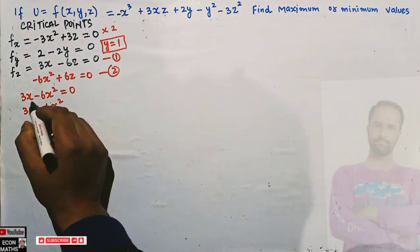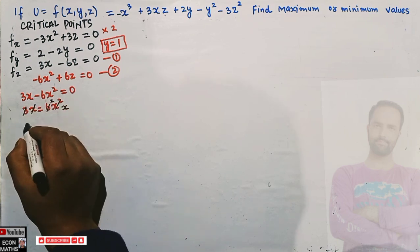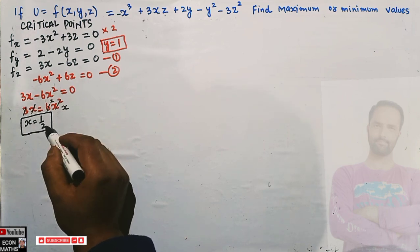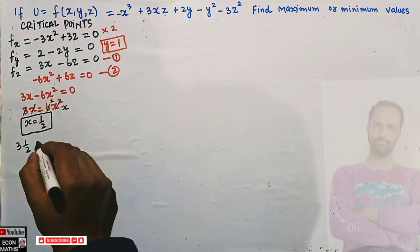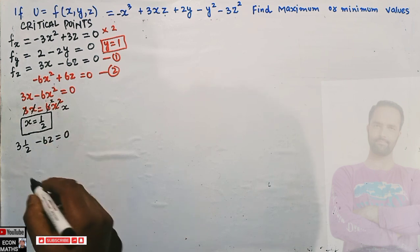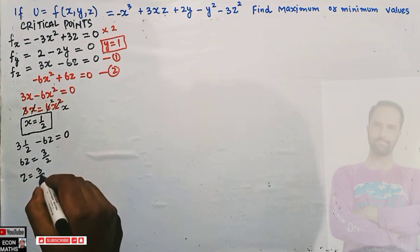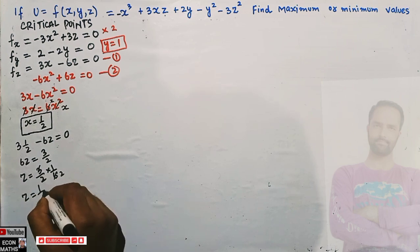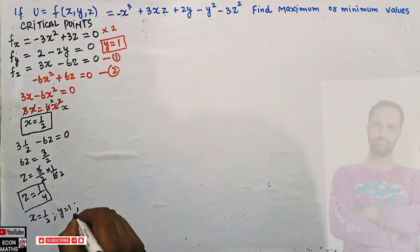From 3x - 6x² = 0, we can factor out x: 3 = 6x, giving x = 1/2. Plugging x = 1/2 into the first equation: 3(1/2) + (-6z) = 0, so 3/2 = 6z, which gives z = 3/12 = 1/4. So the critical point is x = 1/2, y = 1, z = 1/4.